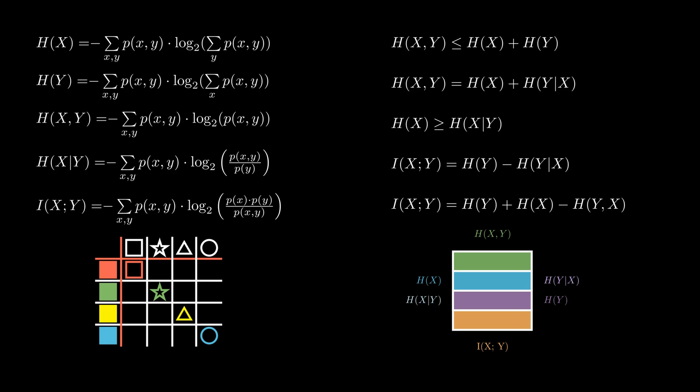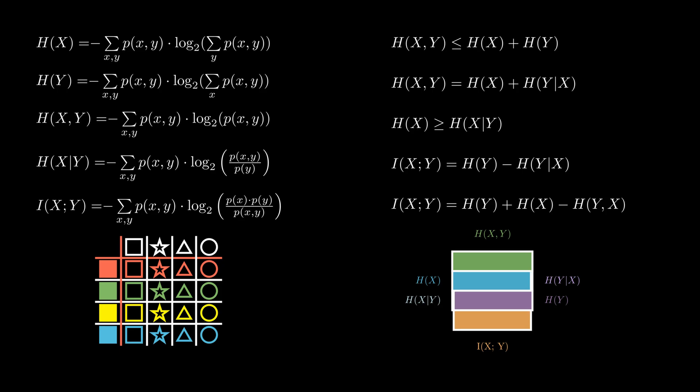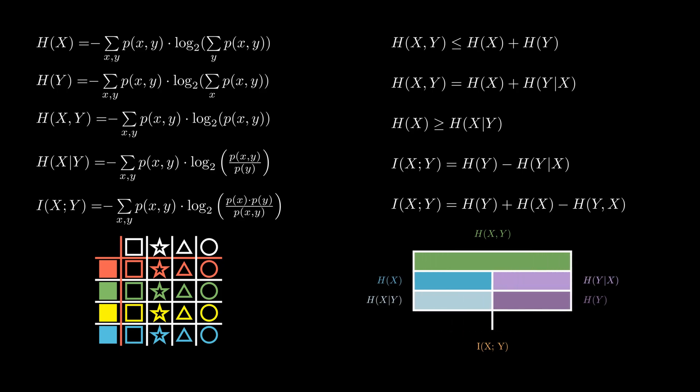The second special case is when both events are independent, meaning that knowing one event tells us nothing about the other. This is exactly the case that I encouraged you to think about earlier. There is no mutual information since knowing the color does not reduce the probabilities of shapes. Conditional entropy is equal to the entropy of an event since knowing one event is not reducing our uncertainty. And joint entropy is equal to the sum of individual entropies.